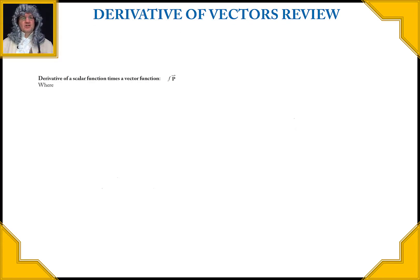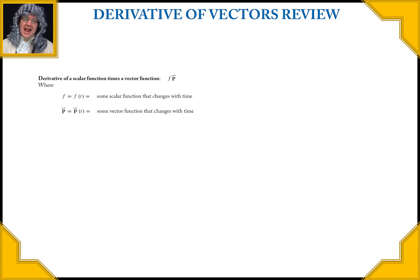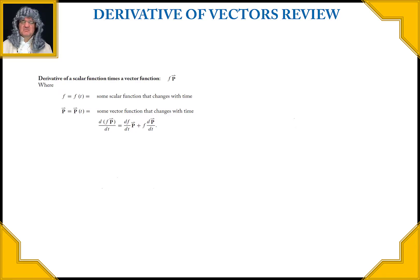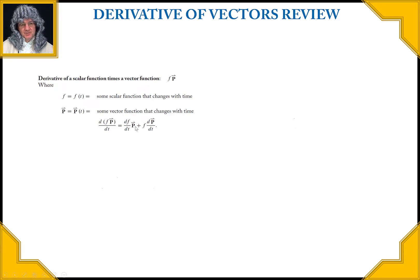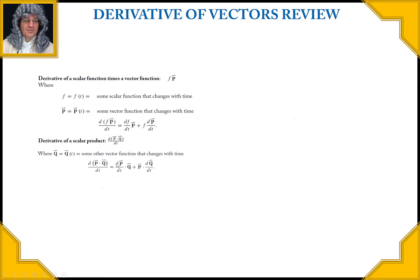We need to discuss taking the derivative of vectors. If you have a generic vector P multiplied by some scalar f, where both can be functions of time, you need to use the product rule: the derivative of f with respect to t times the original P, plus the original f times the derivative of P with respect to t. The same product rule applies when taking the derivative of a dot product of P and Q.